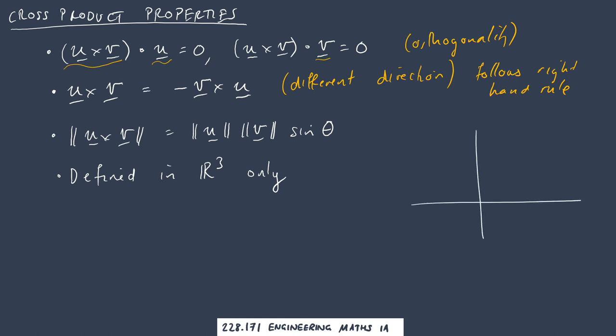Sine theta, as we know, starts at 0, goes up to 1 and then back down to 0 again. This is at π/2, this is at π, this is at 0. Remember π/2 is about 90 degrees and π is 180 degrees.